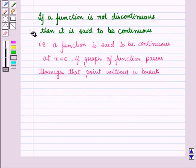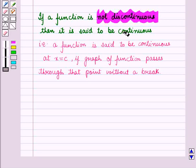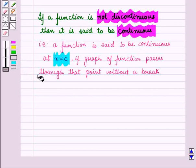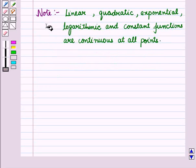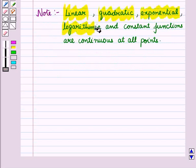If a function is not discontinuous, then it is said to be continuous. A function is said to be continuous at x = c if the graph of the function passes through that point without a break. Note that linear, quadratic, exponential, logarithmic, and constant functions are continuous at all points.